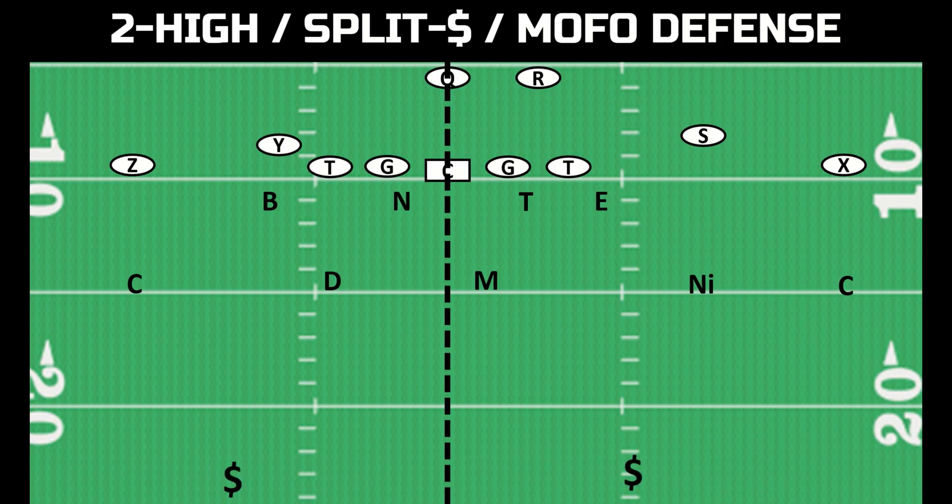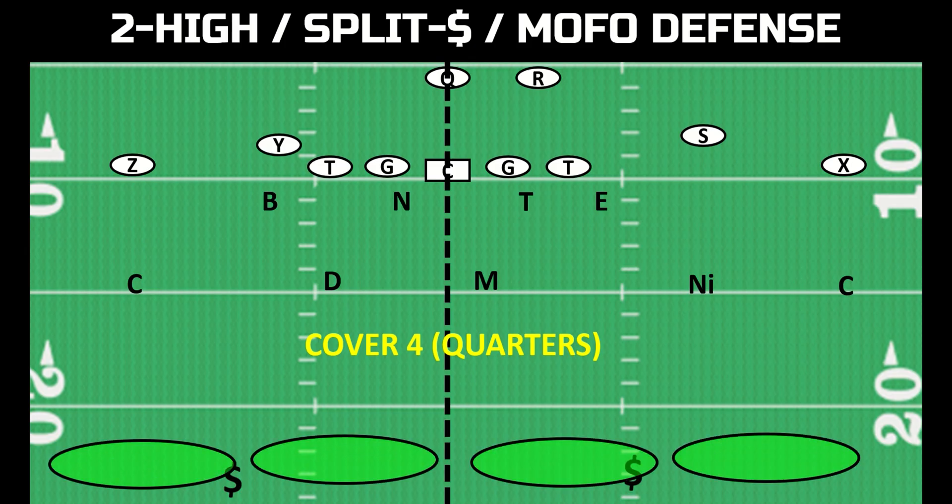Then there's cover four, often referred to as quarters. This is when you have four deep zones. It doesn't really play out exactly like this — you can look at the details in this video — but for now, think of it as four deep zones, which would mean three underneath defenders if we're rushing four to the quarterback.